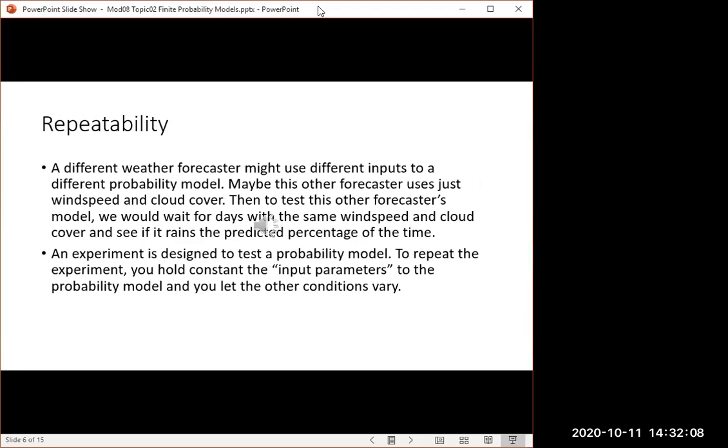Each one puts the numbers into a black box and it goes off, it does some calculation, and we don't know how it does it, but it's just based on however the forecaster thinks the weather works. And so this new forecaster comes up with a prediction. And to test it, we wait for days with the same wind speed and cloud cover for this guy. And then we see, does it rain the predicted percentage of the time?